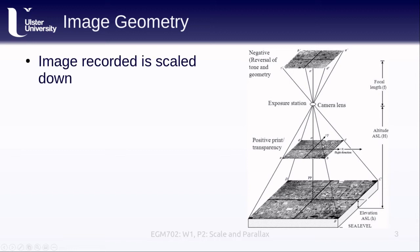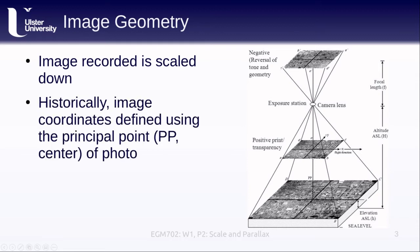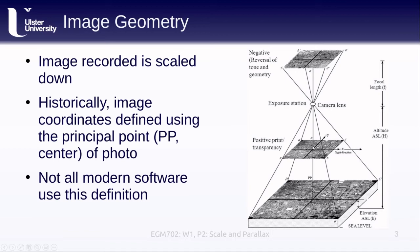The image recorded is a scaled-down version of reality, and we'll talk about what that means shortly. Historically, image coordinates are defined starting from the center of the image, also called the principal point or optical center — the center of the geometry. Modern software doesn't always use this definition, but it's the traditional way of thinking about camera geometry.